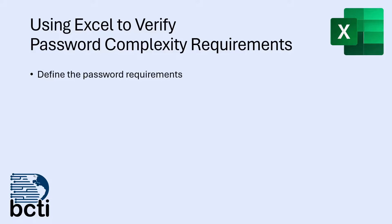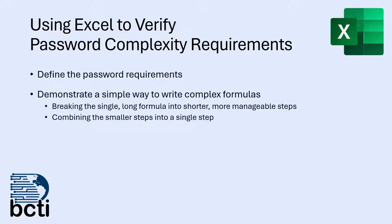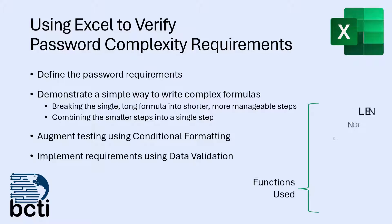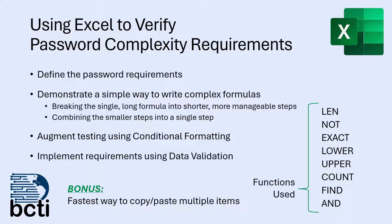We'll start by defining the requirements for an acceptable password. Next, we'll examine a strategy for writing long, complex formulas in a modular way to simplify the design and construction process. We'll use conditional formatting to add a bit of color to our testing process to recognize pass-fail results more easily. And finally, we'll implement our solution using data validation. Along the way, we'll see a bonus Windows feature that will cut your copy-paste process by 90% when working with multiple items.